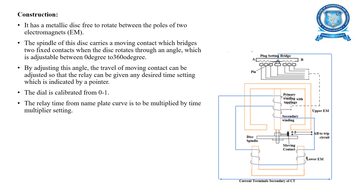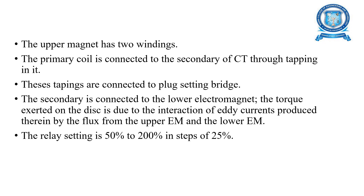Regarding construction, there is a metallic disc free to rotate between the poles of two electromagnets, as shown in the diagram. The spindle of this disc carries a moving contact which bridges two fixed contacts when the disc rotates through an adjustable angle between 0 and 360 degrees. By adjusting this angle, the travel of the moving contact can be set, giving any desired time setting indicated by the pointer. The dial is calibrated from 0 to 1. The upper magnet has two windings; the primary coil is connected to the secondary of the current transformer through tapping, and the secondary is connected to the lower electromagnet. The relay setting is 50% to 200% in steps of 25%.